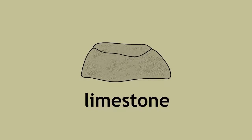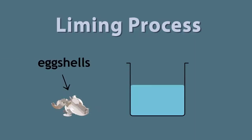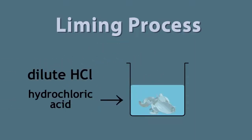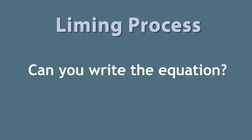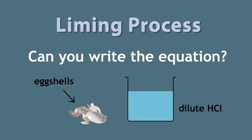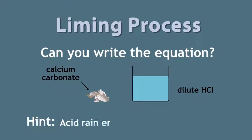Limestone can also be used to neutralize acidic waters and soil. This process is known as liming. We can mimic this liming process by placing some eggshells into a very dilute solution of hydrochloric acid. You can observe that the eggshells will dissolve in acid and a gas is produced. Can you write the equation for this reaction? Keep in mind that these eggshells are composed primarily of calcium carbonate. Here is a hint: it's very similar to the reaction that occurs when acid rain erodes limestone structures. Please pause and resume when ready.